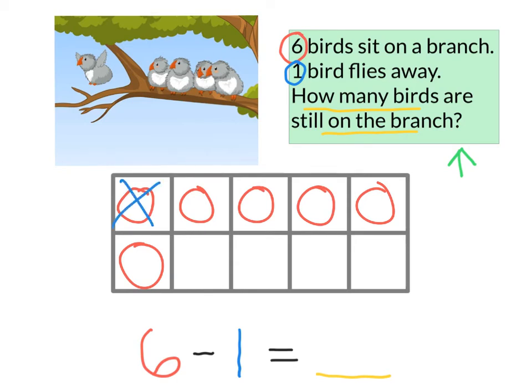Easy peasy. To find my answer, how many birds are still on the branch, I just count how many red circles I have left. Let's see. Five. And I write that answer in the blank space.